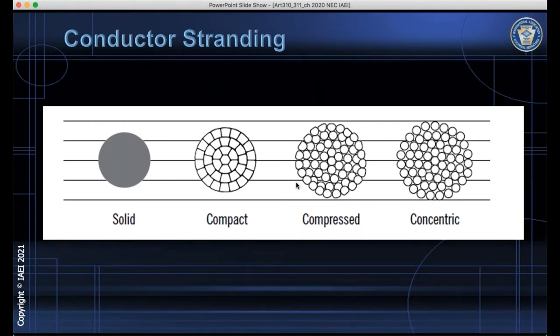If you look at, for example, 600 volt copper building wire, most of that is compressed. And so what happens is the manufacturer takes all of those strands, they twist them together, and then they apply some compression using a die during the process to reduce the outer diameter by a small amount. It's usually about 3% smaller than a concentric conductor.